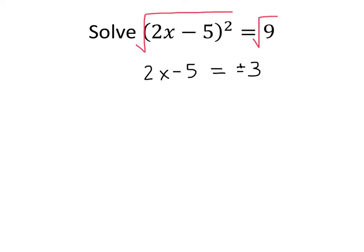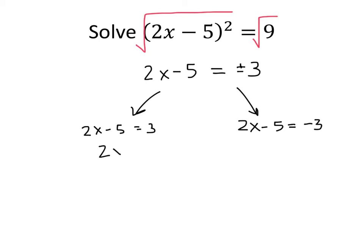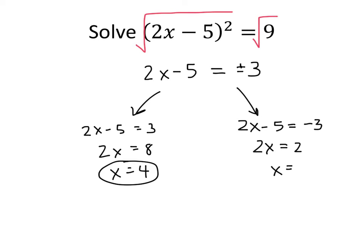So that means we have two possibilities: either 2x minus 5 equals positive 3, or 2x minus 5 equals negative 3. We'll solve each of these separately. In both cases, we add 5 to both sides and divide both sides by 2. So we get one solution, x equals 4, and another solution, x equals 1. And we're done.